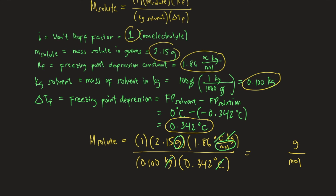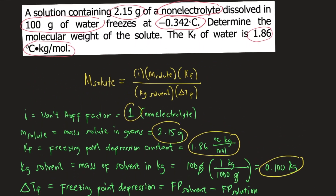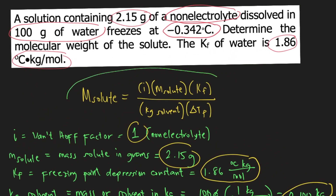Plugging the numbers into the calculator, the molar mass or molecular weight equals 117 grams per mole. This is the answer to the question. If you want to know how this equation was derived, you can check the description box below.